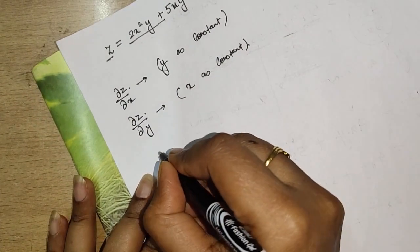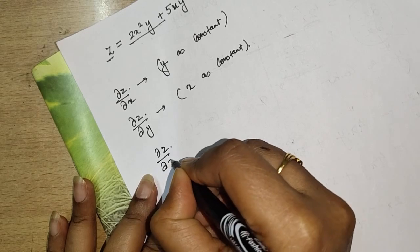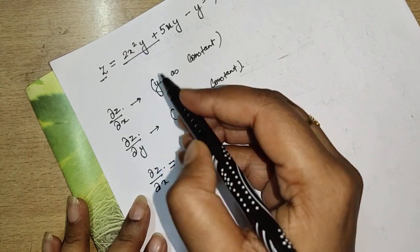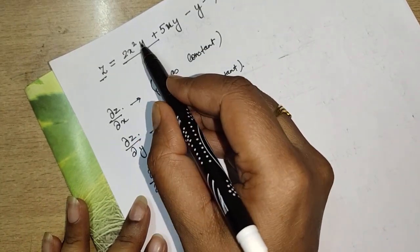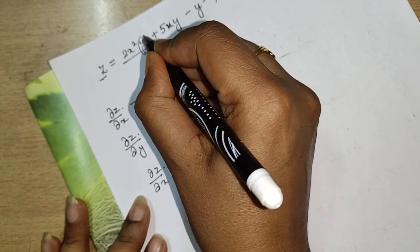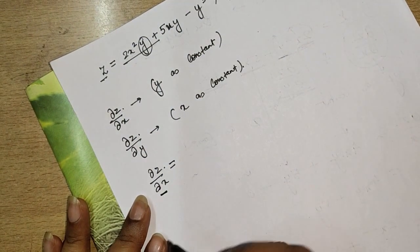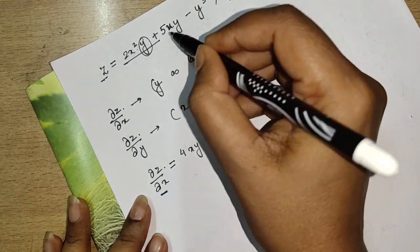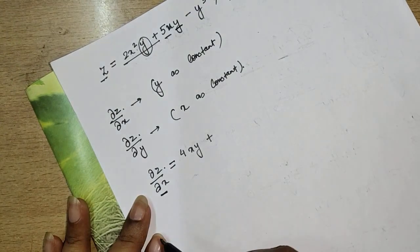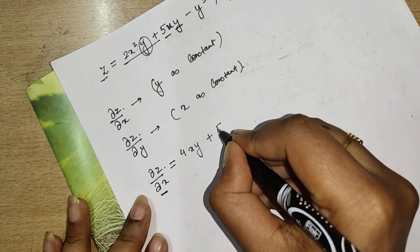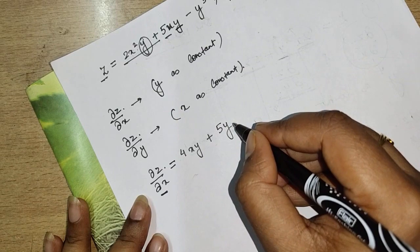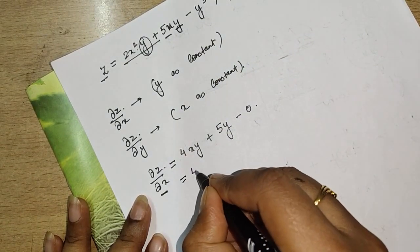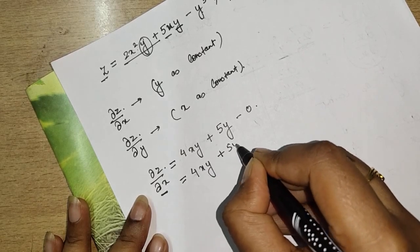We need to find ∂z/∂x. Differentiating 2x²y: y is constant, so this gives 4xy. For 5xy: y is again constant, so x becomes 1, giving 5y. For −y³: this is constant with respect to x, so the derivative is 0. Therefore ∂z/∂x = 4xy + 5y.